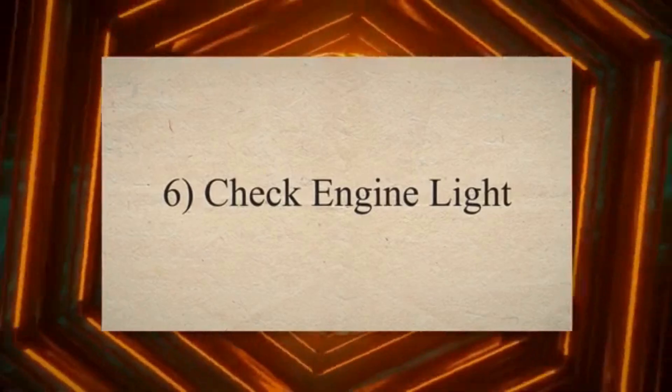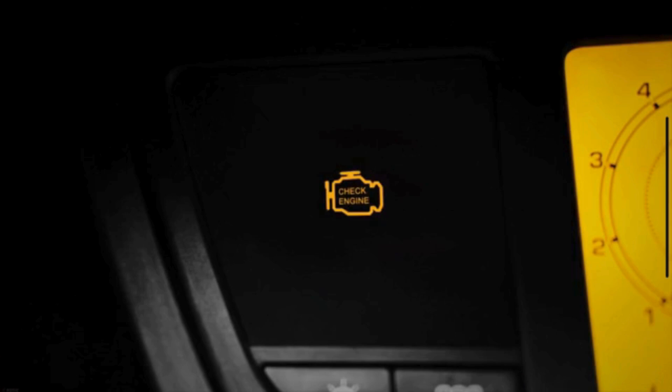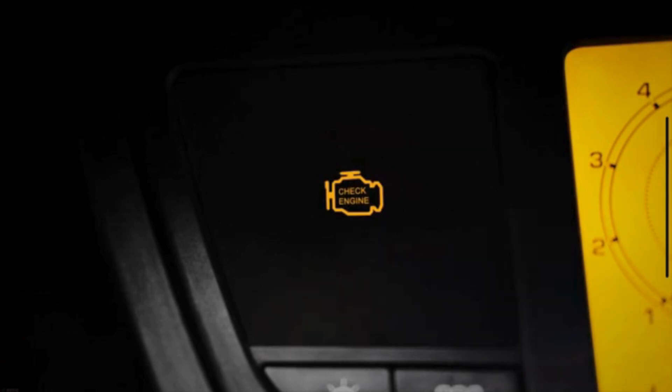Number six, check engine light. A bad ignition coil can trigger the vehicle's onboard diagnostic system, causing the check engine light to illuminate. You can use a diagnostic scanner to retrieve error codes that may point to ignition coil problems.